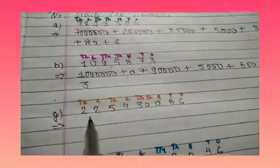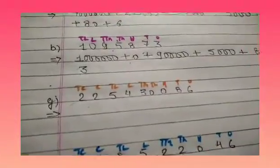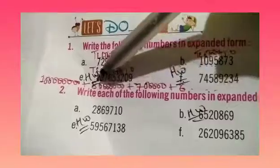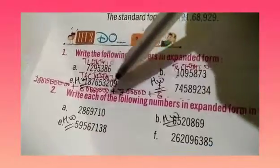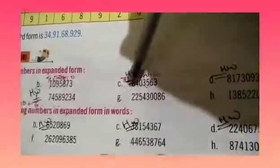Leave one line and write the next number. C part is for your homework. D part is also for your homework. E part and F part are also for your homework. So we will copy down G part in our classwork copy.